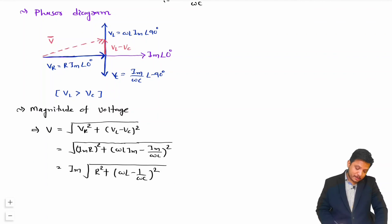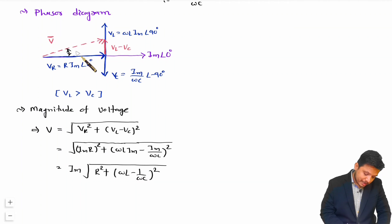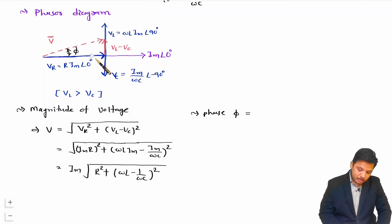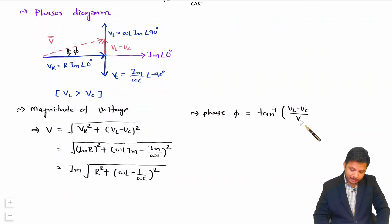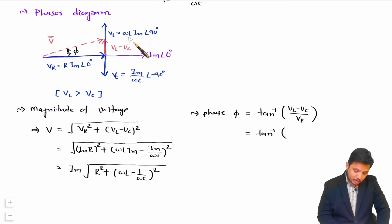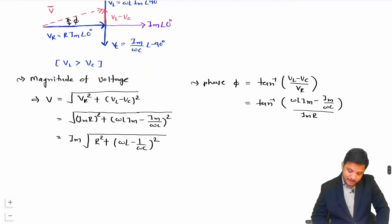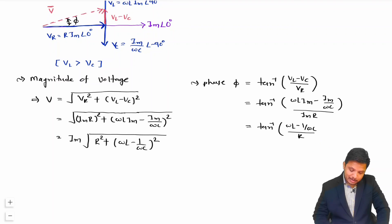To find the phase angle φ, using the triangle we get φ = tan⁻¹(opposite/adjacent) = tan⁻¹((VL − VC)/VR). Substituting VL = ωL·Im, VC = Im/ωC, and VR = Im·R, the Im cancels, giving φ = tan⁻¹((ωL − 1/ωC) / R).